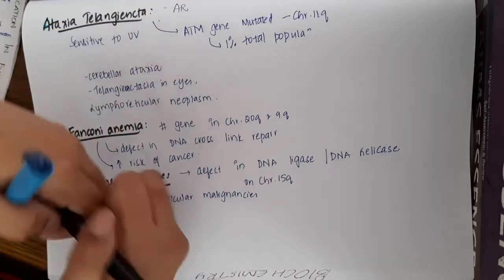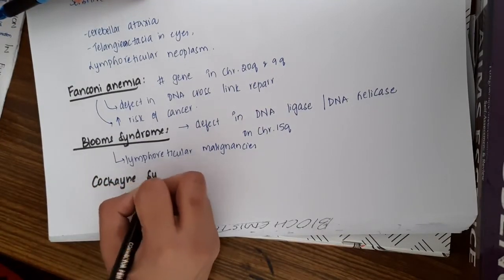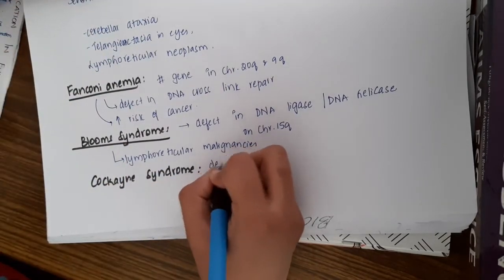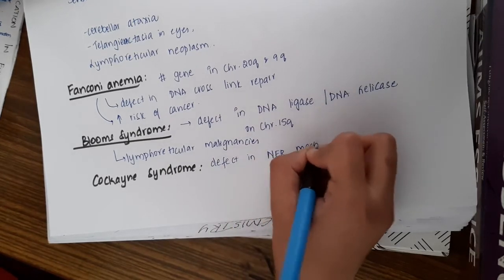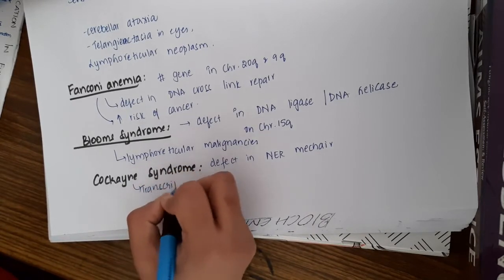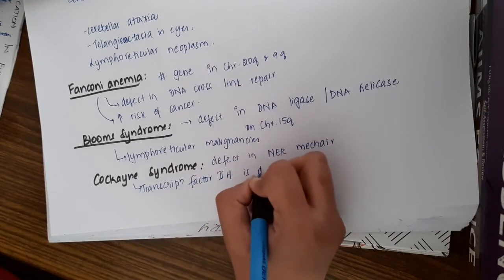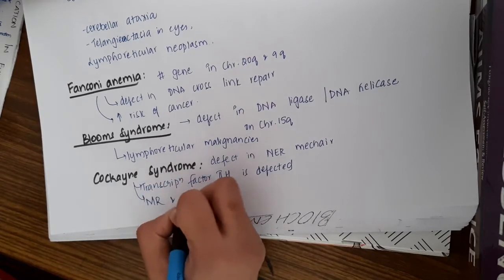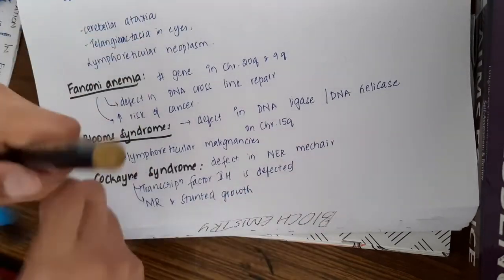The next syndrome is called Cockayne syndrome. This Cockayne syndrome also has a defect in nucleotide excision repair mechanisms. Here, transcription factor 2H is defective in patients with Cockayne syndrome. The patient suffers from mental retardation and stunted growth.